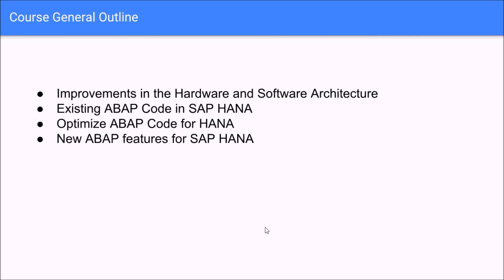In this course, I will cover four basic concepts about ABAP for SAP HANA. I will talk about the improvements in hardware and software architecture. I will cover topics about existing ABAP code in SAP HANA. I will show you how to optimize ABAP code for SAP HANA, and I will talk about new ABAP features for SAP HANA.